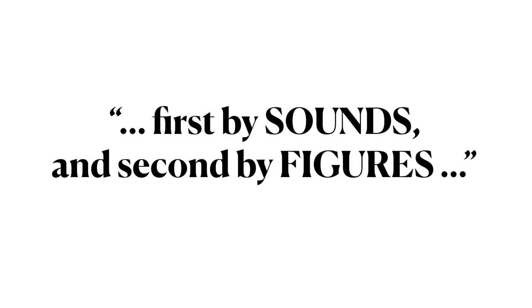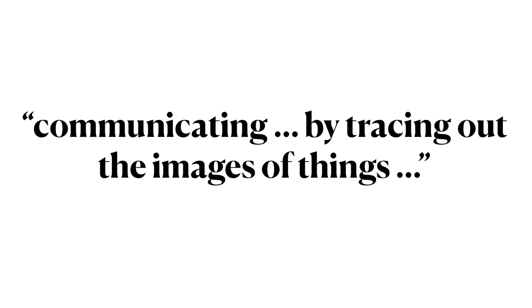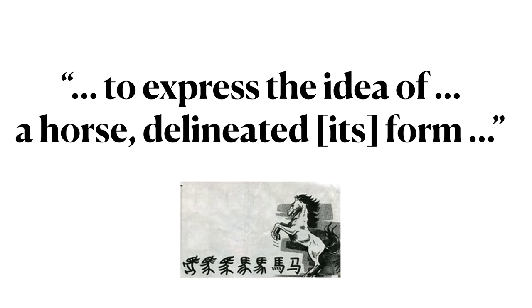In Book Four of this treatise, Warburton writes: 'Men soon found out two ways of communicating their thoughts to one another. The first, by sounds, and the second, by figures. The first and most natural way of communicating our thoughts, by marks or figures, is by tracing out the images of things. So, the early people to express the idea of a man or a horse delineated the form of those animals. Thus, the first essay towards writing was a mere picture.'